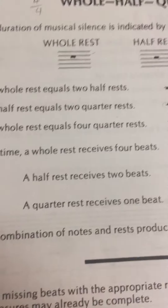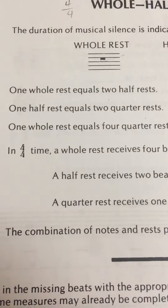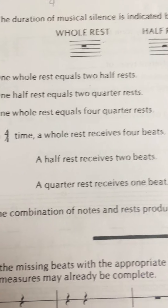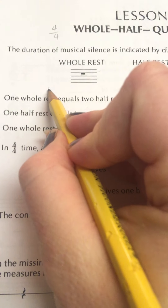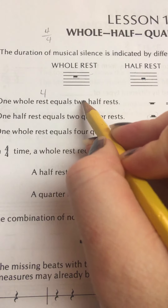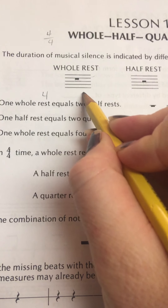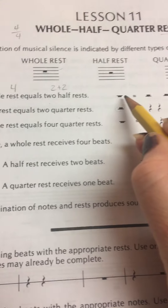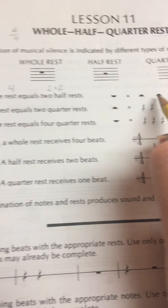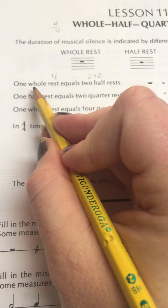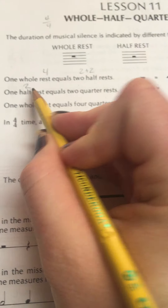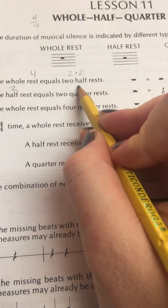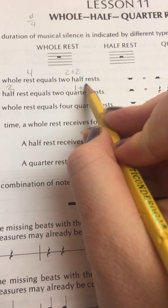This shows you how they equal each other. One whole rest — four beats — equals two half rests. Two plus two. One half rest, two beats, equals two quarter rests, which are each one beat.